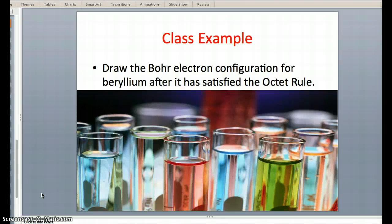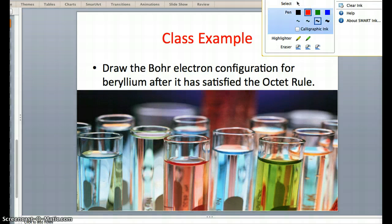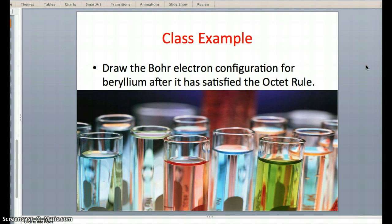Now we're trying to draw the Bohr electron configuration for beryllium after it has satisfied the octet rule. The key part to notice is that we're talking about after it has satisfied the octet rule.